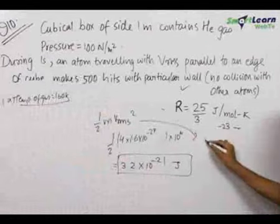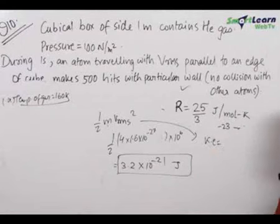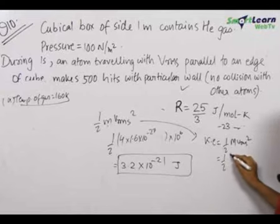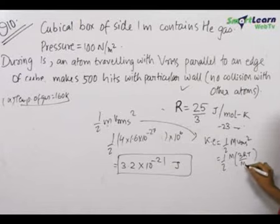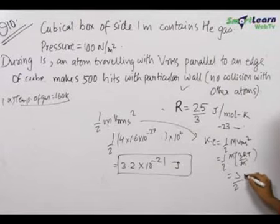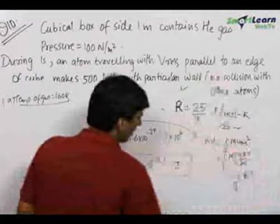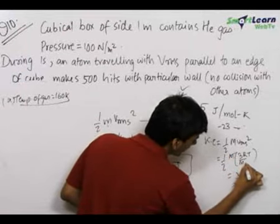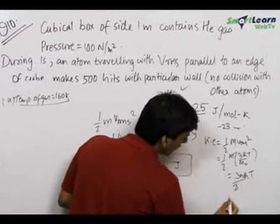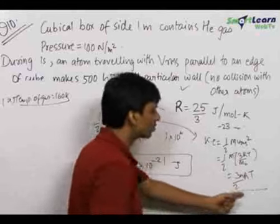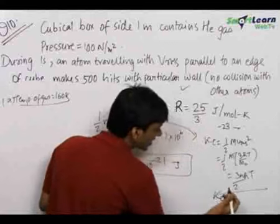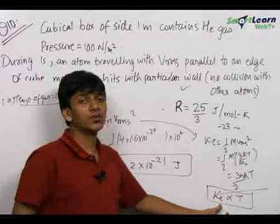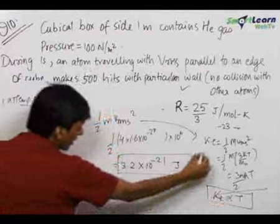One important thing we see here: the total translational kinetic energy of a gas is equal to ½ × M × v_rms², which equals ½ × M × (3RT/M₀) = (3/2)nRT. So total translational kinetic energy is directly proportional to temperature. This means if the temperature of an ideal gas is fixed, the kinetic energy of the gas will be fixed, and vice versa. This is an important point to note for other questions.